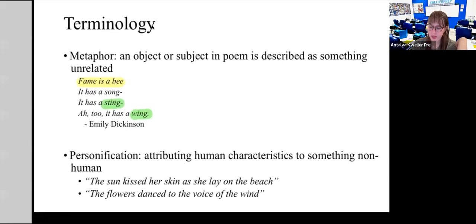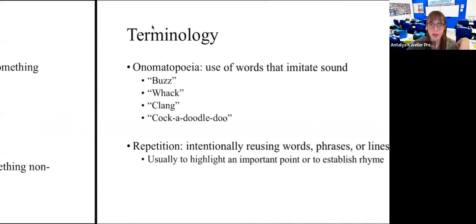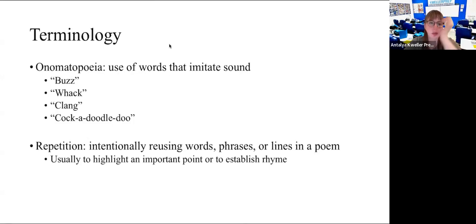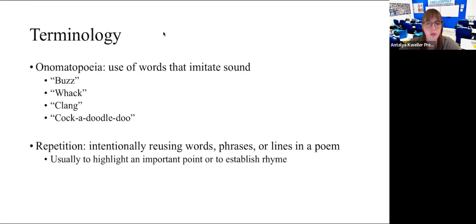Then there is onomatopoeia — the use of words that imitate sound. Things like buzz, whack, clang, cock-a-doodle-doo are all examples of onomatopoeia. Then there's also repetition, which is pretty self-explanatory. In a poem, sometimes the author will repeat words, phrases, or lines.